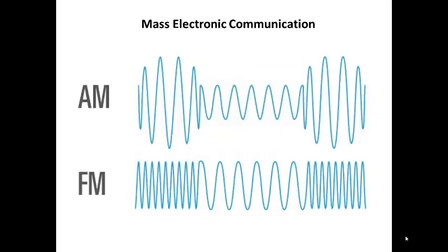In 1934, Edwin Armstrong built a frequency modulation, or FM, transmitter for RCA. AM radio, which was fine for news and talk radio, suddenly had a better-suited neighbor in FM, thanks to its higher fidelity — meaning more data could be carried over the airwaves, delivering better sound.